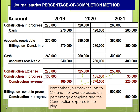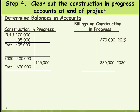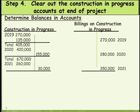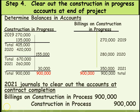Now let's look at this in the T-accounts. That would be 2019, then 2020, and 2021, giving us a combined balance of $900,000. We would then clear those accounts out at the end of year three.